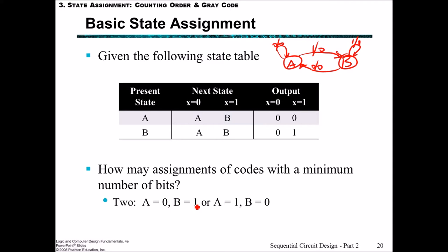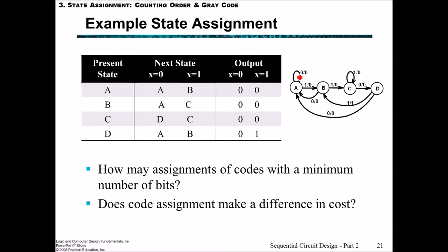We could either have A as 0 and B as 1, or A as 1 and B as 0. But when we have more states, the choice of the assignment of these binary codes to represent the state names actually has an impact upon our design.